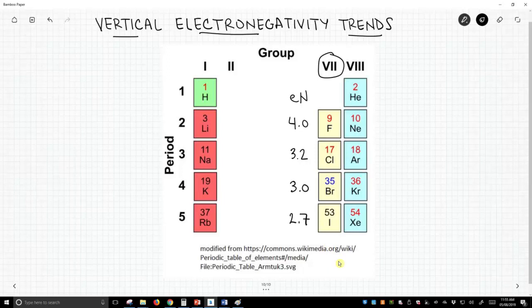Now, in a previous video, we saw that electronegativity increased as we went across from left to right on the periodic table.